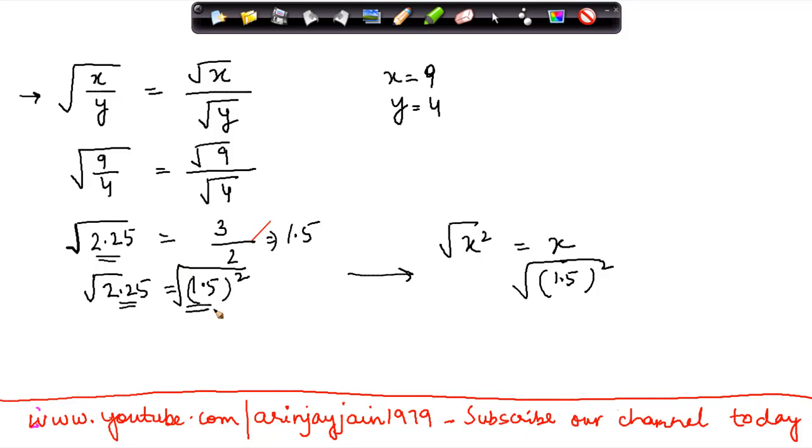So I put this as an under root sign here and I do the square of this. So if I do this, 1.5 into 1.5, 15 times 15 gives me 225, so this gives me 2.25, which is also the number out here.